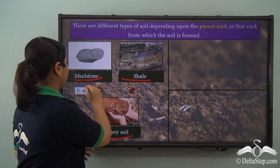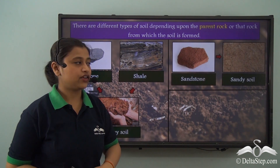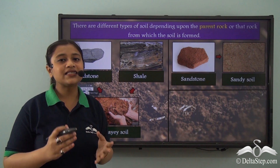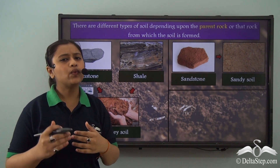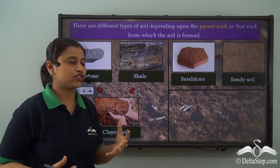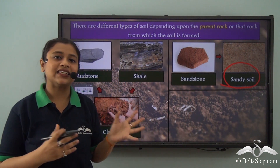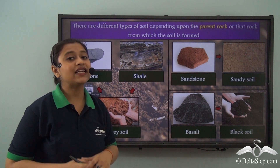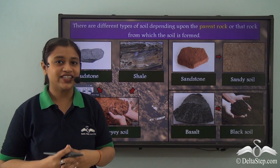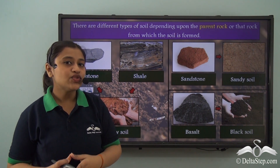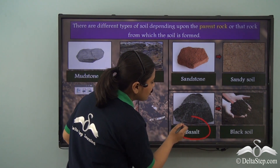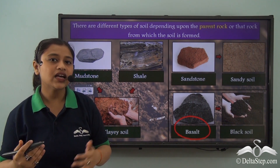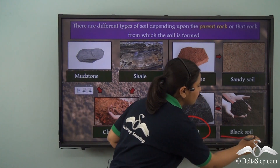Sandy soil is made out of sandstone. Sandstone is the parent rock which, after undergoing weathering and erosion, has led to the formation of sandy soil. Another very interesting example is black soil. The black soil has also been formed after the weathering and erosion of the parent rock basalt. So basalt, after weathering and erosion, leads to the formation of black soil.